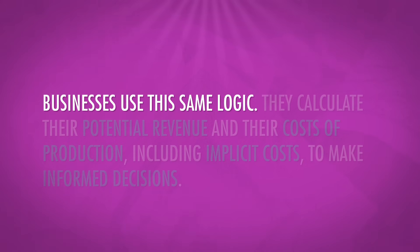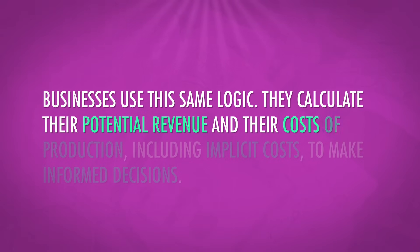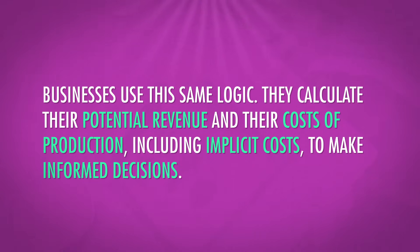Businesses use this same logic. They calculate their potential revenue and their costs of production, including implicit costs, to make informed decisions. This means that companies in competitive markets don't make very much profit. In fact, economists argue that they make no economic profit. Companies need to make accounting profit to stay in business, so they do make a profit — just not above and beyond their opportunity costs.